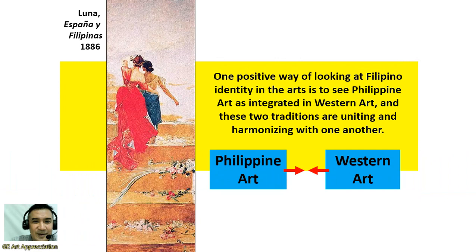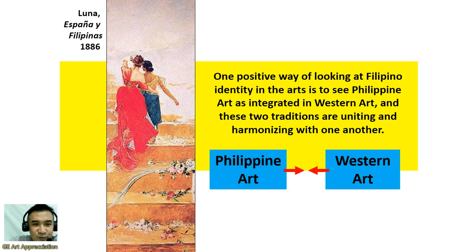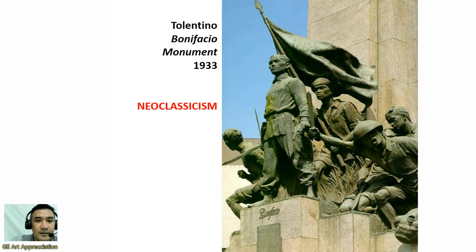This is another painting by Juan Luna — España y Filipinas, in 1886 — meaning Spain and the Philippines. One positive way of looking at Filipino identity in the arts is to see Philippine art as integrated in Western art, with the two traditions uniting and harmonizing with one another. In the painting, you can see two women: one dressed as a Spaniard or European, and one in Filipino costume — representing the Philippine art and Western art harmonizing with each other.